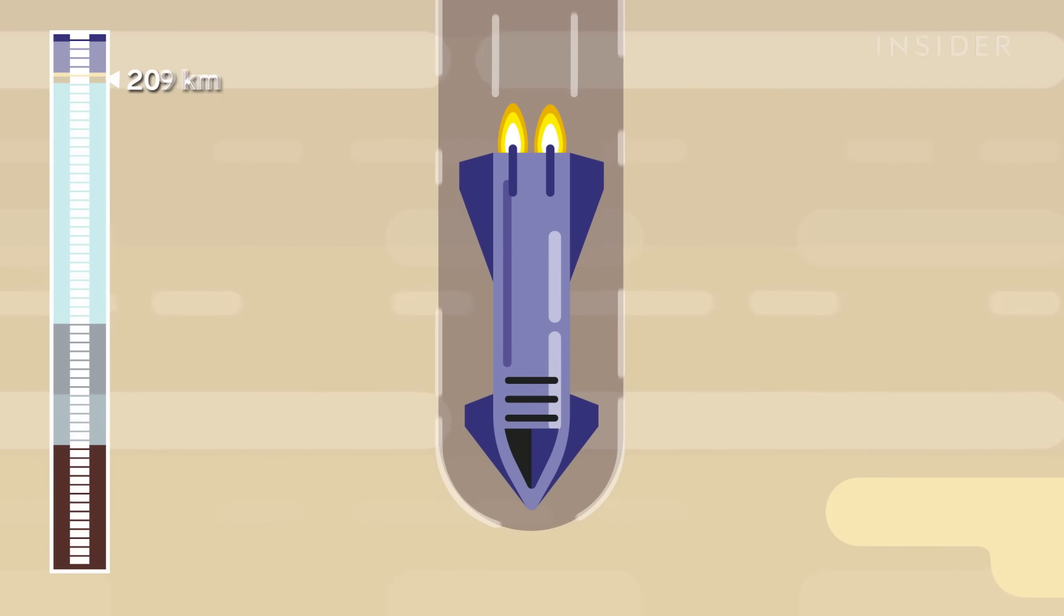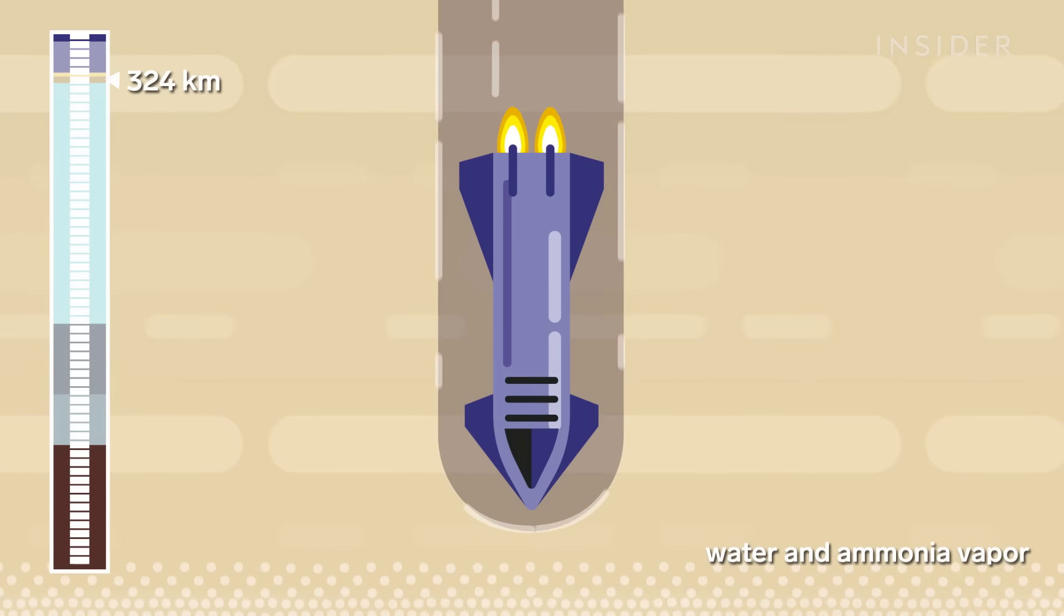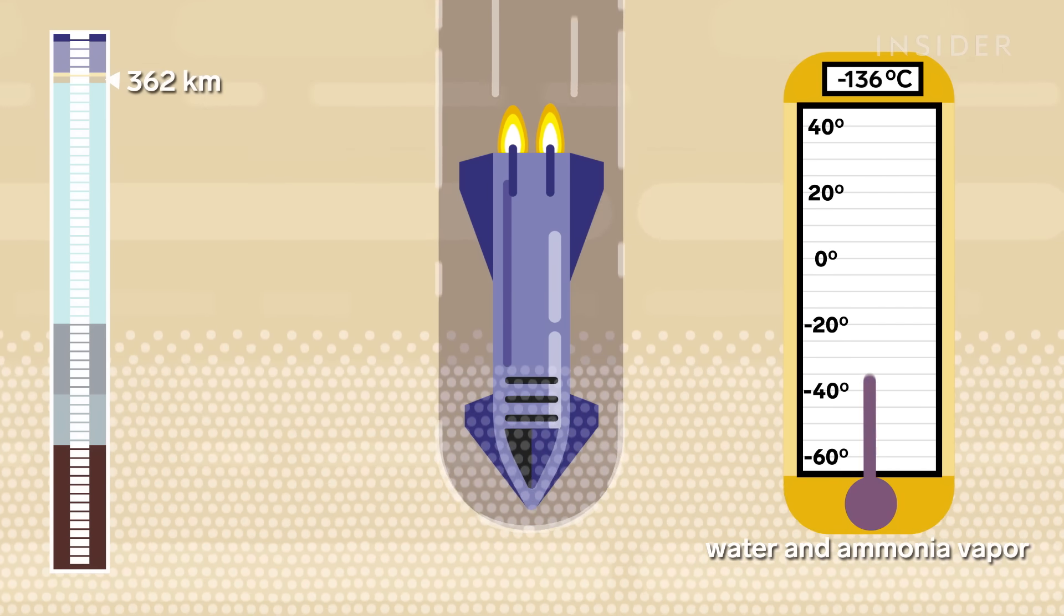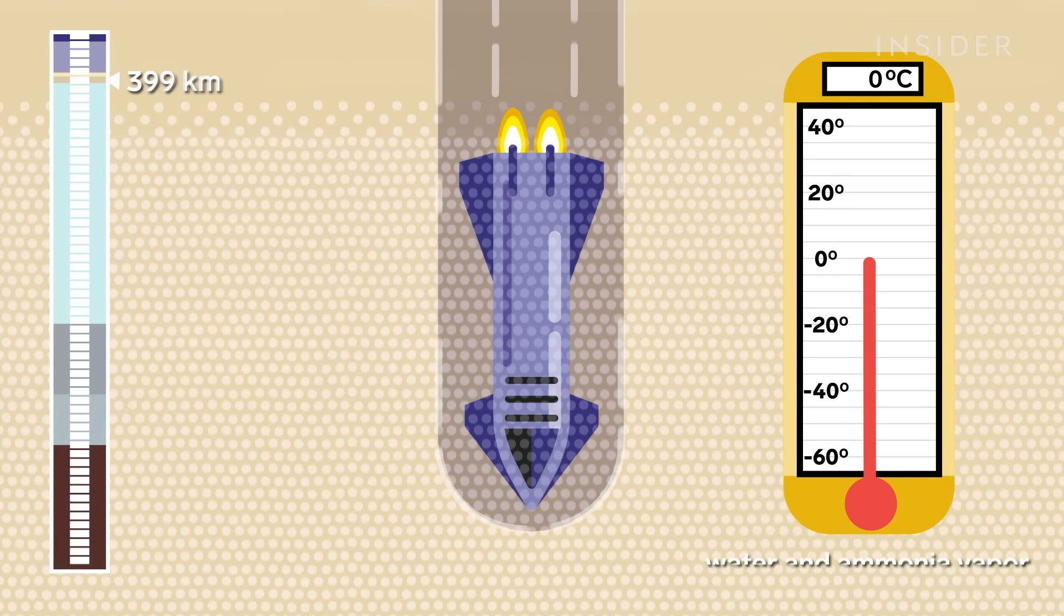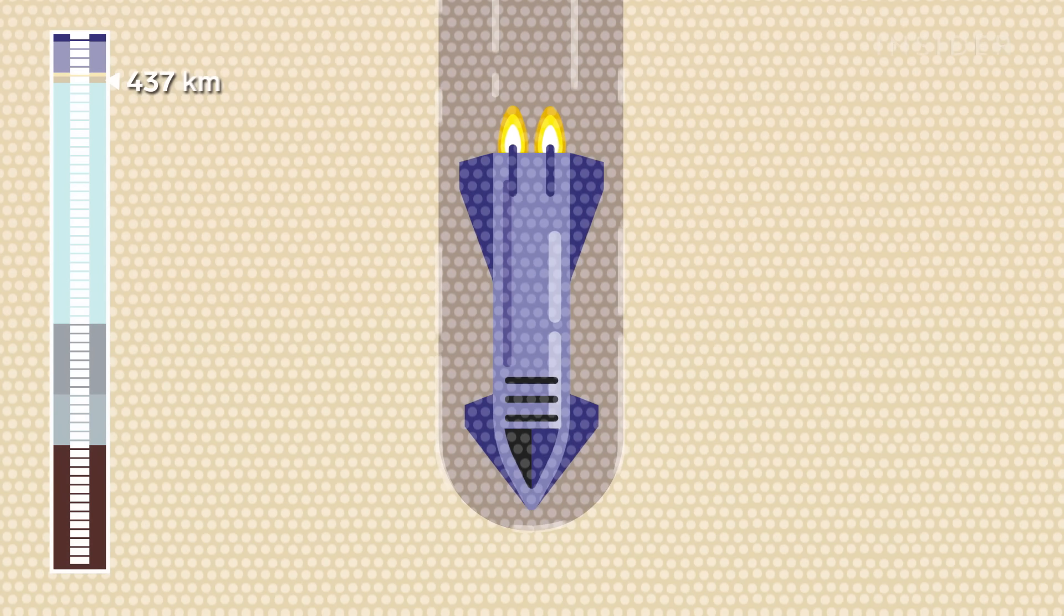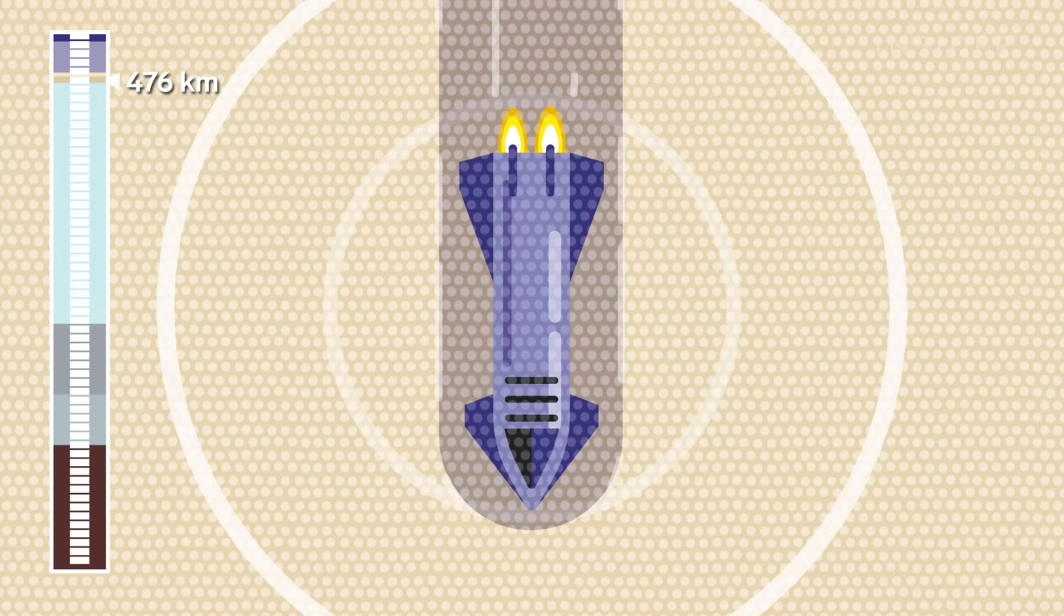So let's head down where it's a bit warmer. Down here, at a depth of 300 kilometers, we reach a layer of water, which is a balmy zero degrees Celsius. Now, the deeper we plunge, the higher the pressure is around us.